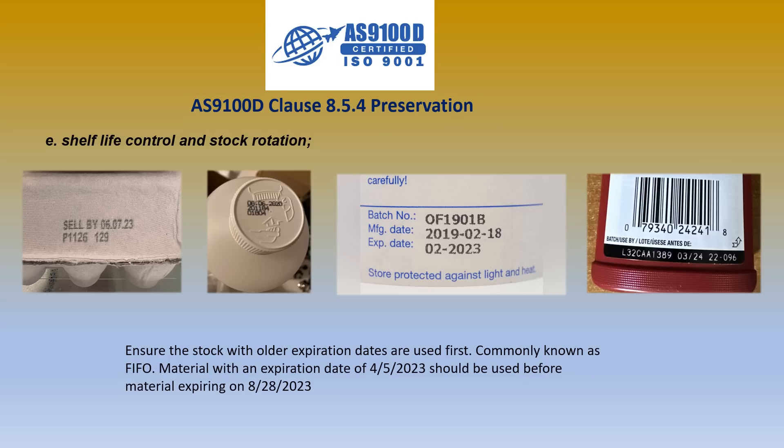Shelf life control and stock rotation. As consumers, we know shelf life is an expiration date stamped on a bottle of mayonnaise or pickles. In this case, the first image is an expiration date stamped on a carton of eggs with a date of June 7th, 2023. Today being June 28th, 2023, we probably would not want to use those eggs for cooking.